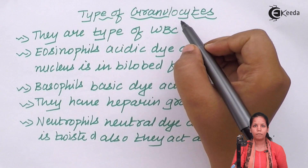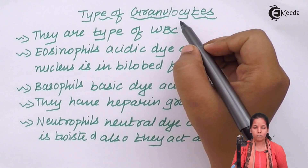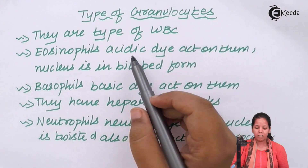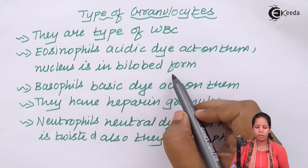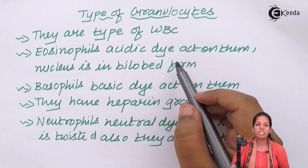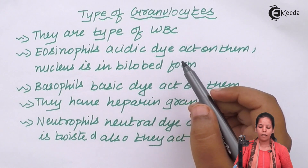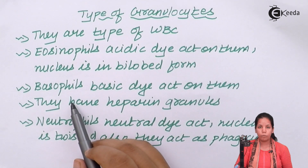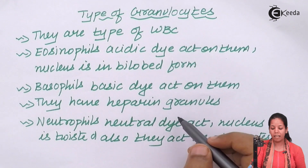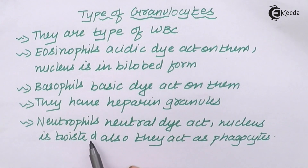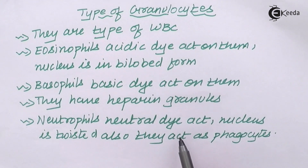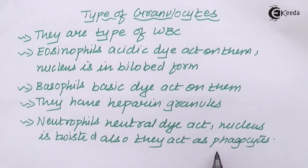Granulocytes are a type of WBC or leukocyte, and there are three kinds: eosinophils, basophils, and neutrophils. Eosinophils have a bilobed nucleus and are stained by acidic dyes in a CBC (complete blood count). Basophils are acted on by basic dyes and are associated with heparin granules. Neutrophils are acted on by neutral dyes, have a twisted or multilobed nucleus, and act as phagocytes in most cases.